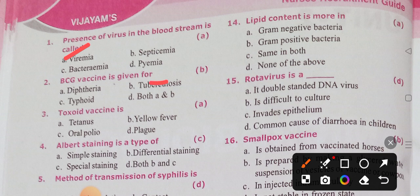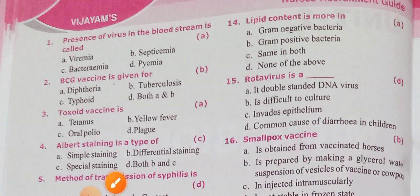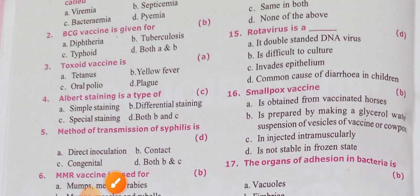BCG means Bacillus Calmette-Guérin. It has to be given at birth, and if it is missed, up to one year we can give it. The site is the left side of the arm, administered intradermally.